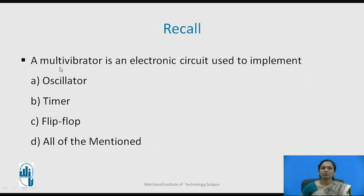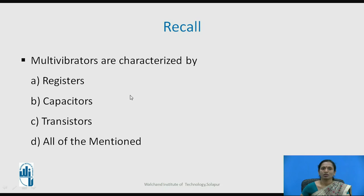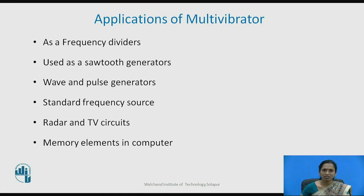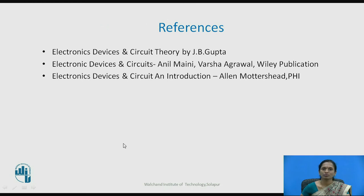A multivibrator is an electronic circuit used to implement two stable states, with the correct answer being option D. The components required for a multivibrator are resistors, capacitors, and transistors — all of the above. Applications include frequency dividers, sawtooth generators, wave and pulse generators, frequency sources for testing instruments, radar and television circuits, and as memory elements in digital systems.